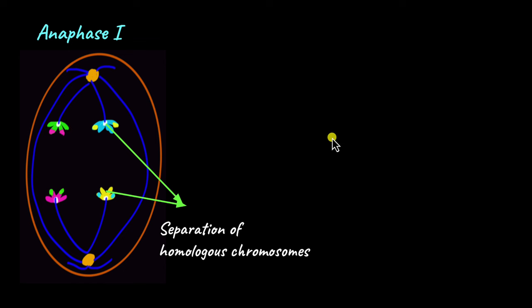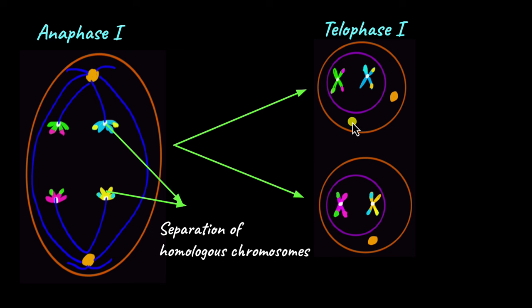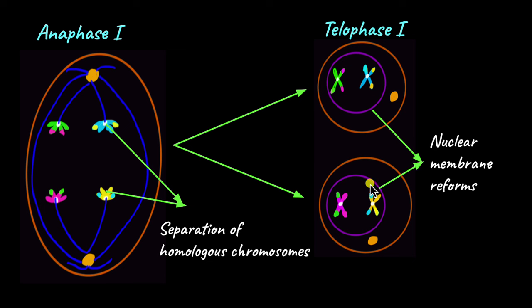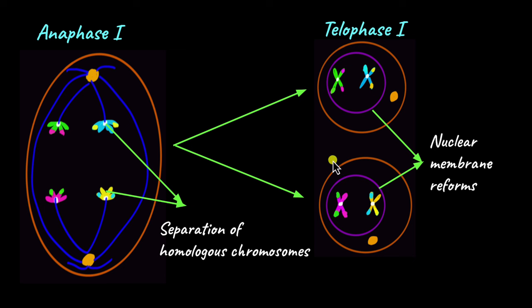Telophase 1 follows anaphase 1. In telophase 1, the homologous chromosomes are fully separated and a nuclear membrane forms around them again. As cytokinesis follows telophase 1, the daughter cells are fully formed and each daughter cell now has one of the homologous pair. Unlike after mitosis, these chromosomes do not fully decondense to form chromatin again, because the cells still have to undergo meiosis 2. So they undergo partial decondensation, but by the time meiosis 2 happens, they have formed chromosomes again.